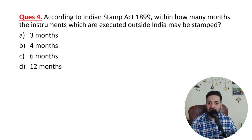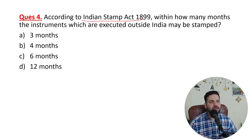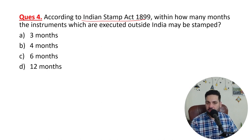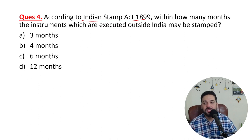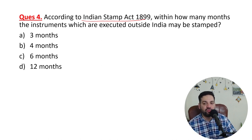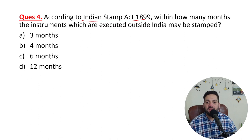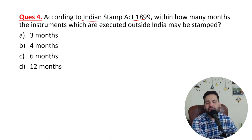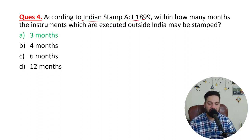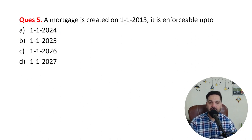According to the Indian Stamp Act, within how many months may instruments executed outside India be stamped? When they arrive in India, they must be stamped within 3 months. Note: registration has a 4-month limit, but Stamp Duty requires stamping within 3 months.